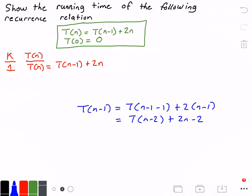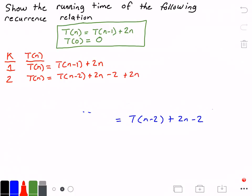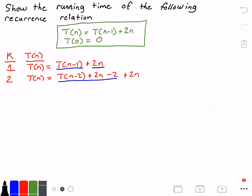We can now substitute t(n-2) + 2(n-2) in place of t(n-1). So at step k=2, our function t(n) = t(n-2) + 2(n-2) + 2n. Essentially, t(n-1) has become t(n-2) + 2(n-2), and then we add the 2n term.